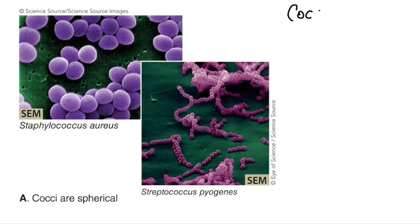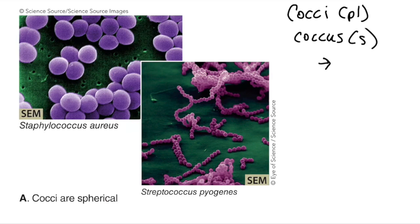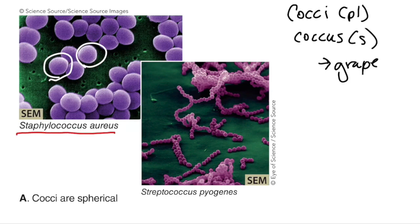First up we have what are called the cocci — that is the plural form, and coccus is the singular. This word comes from the Greek root word for grape, so when you're trying to remember what shape a coccus is, think grape. You can see these very nice round bacteria in our picture of Staphylococcus aureus.